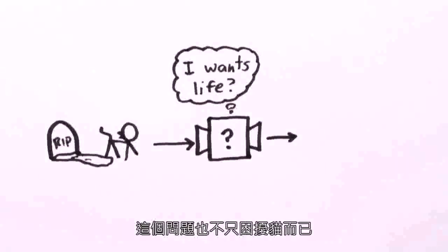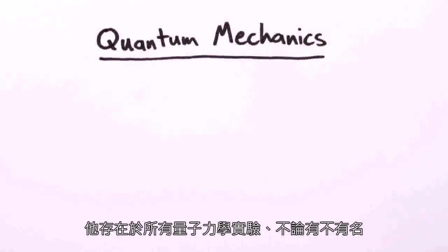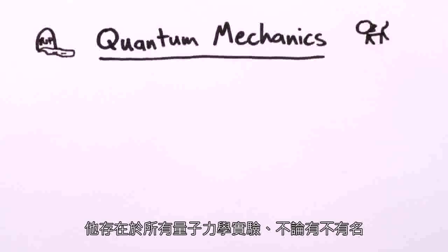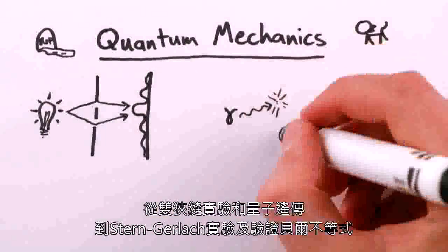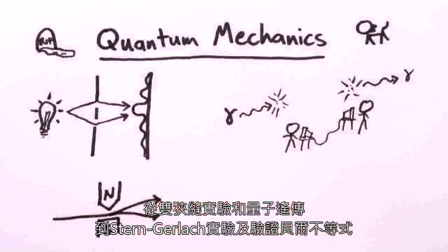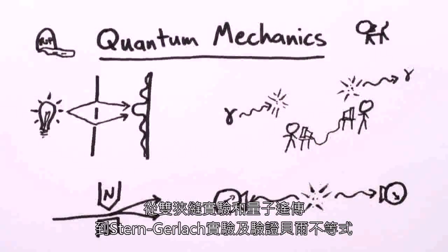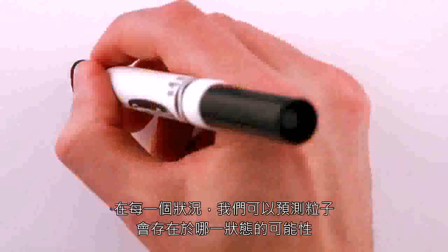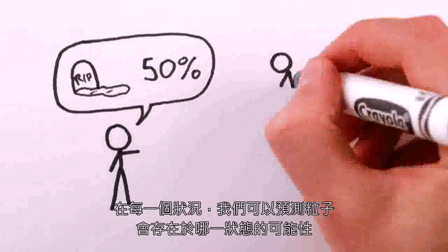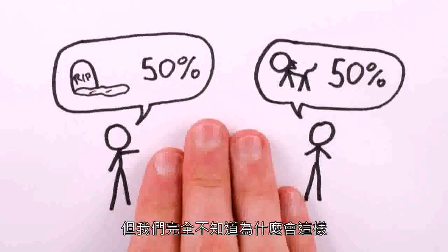This isn't just a problem with cats, either. It plagues every single quantum mechanics experiment, famous or otherwise, from the double-slit experiment and quantum teleportation, to the Stern-Gerlach experiment and tests of the Bell inequalities. In every case, we can predict how likely it is for a particle to be in one state or another, but have no clue how it actually ends up that way.